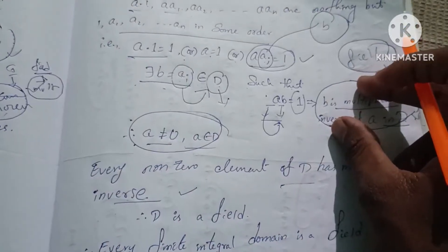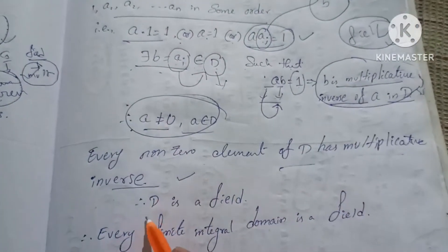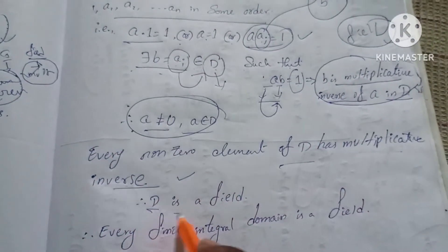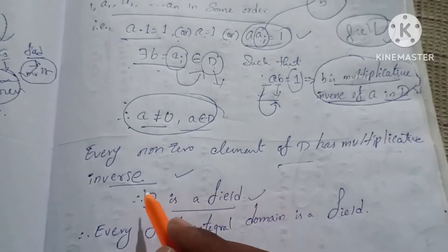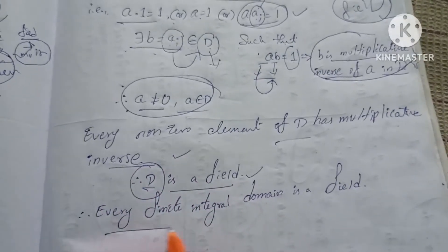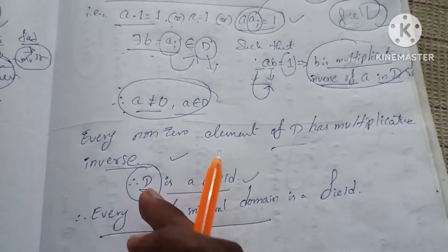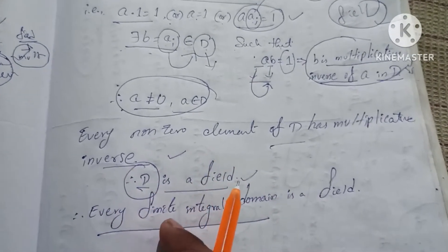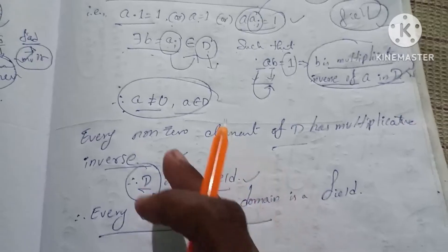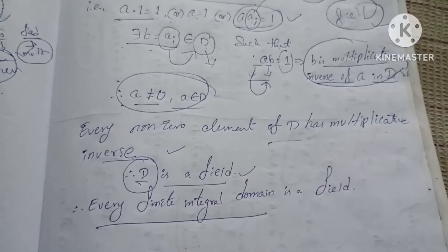Since D is a commutative ring with unity, has no zero divisors, and every non-zero element has a multiplicative inverse, therefore every finite integral domain is a field. This is the solution.